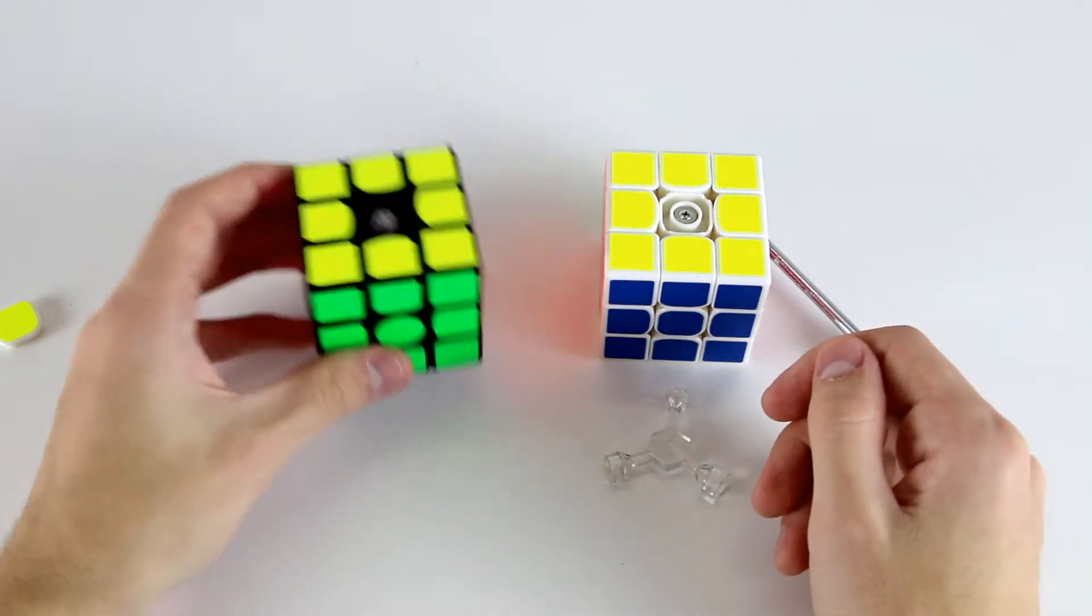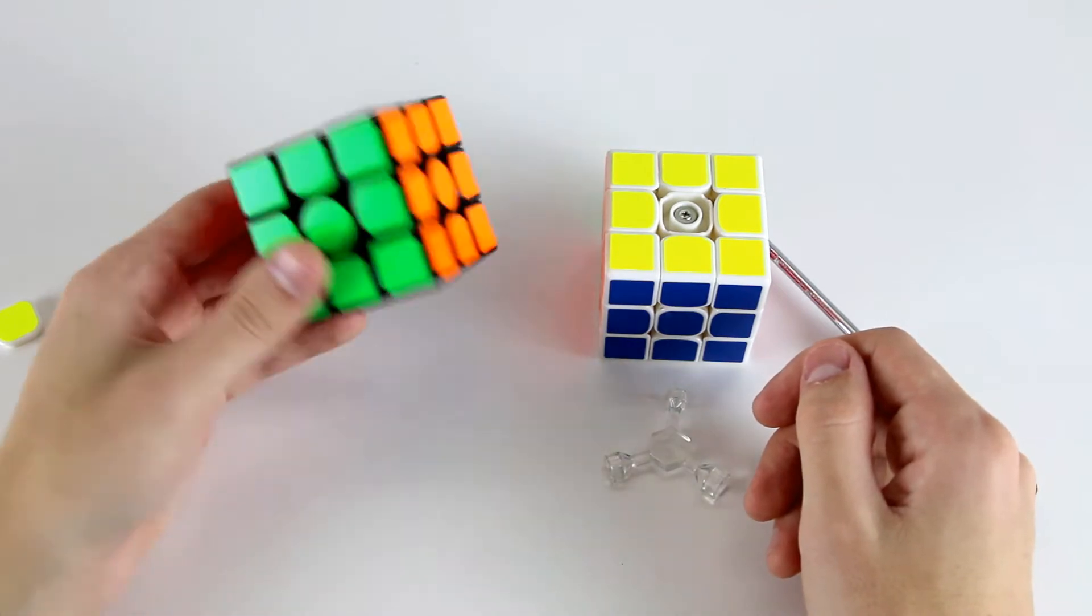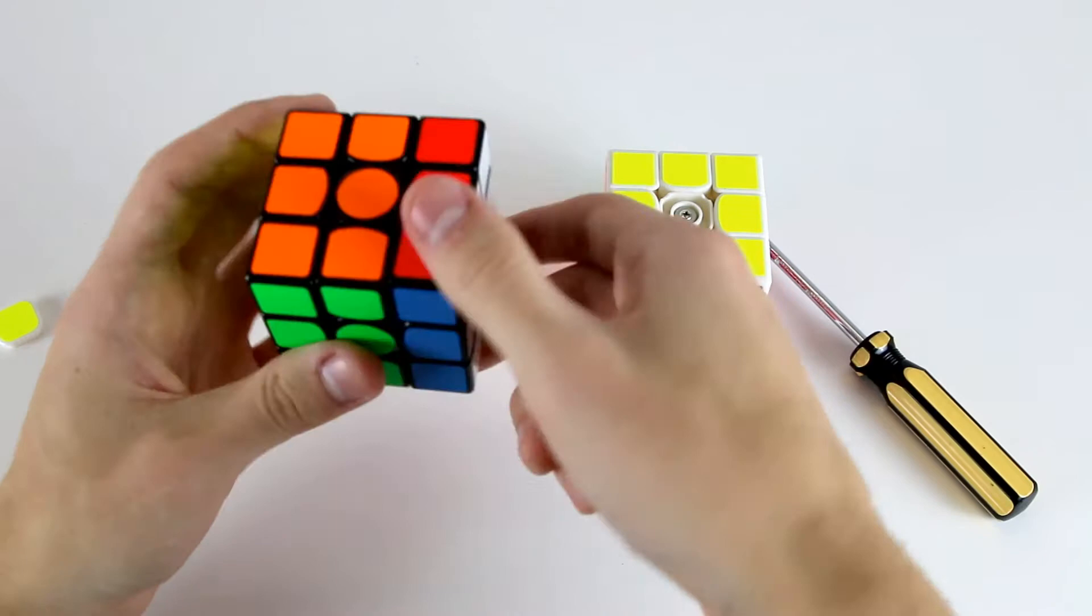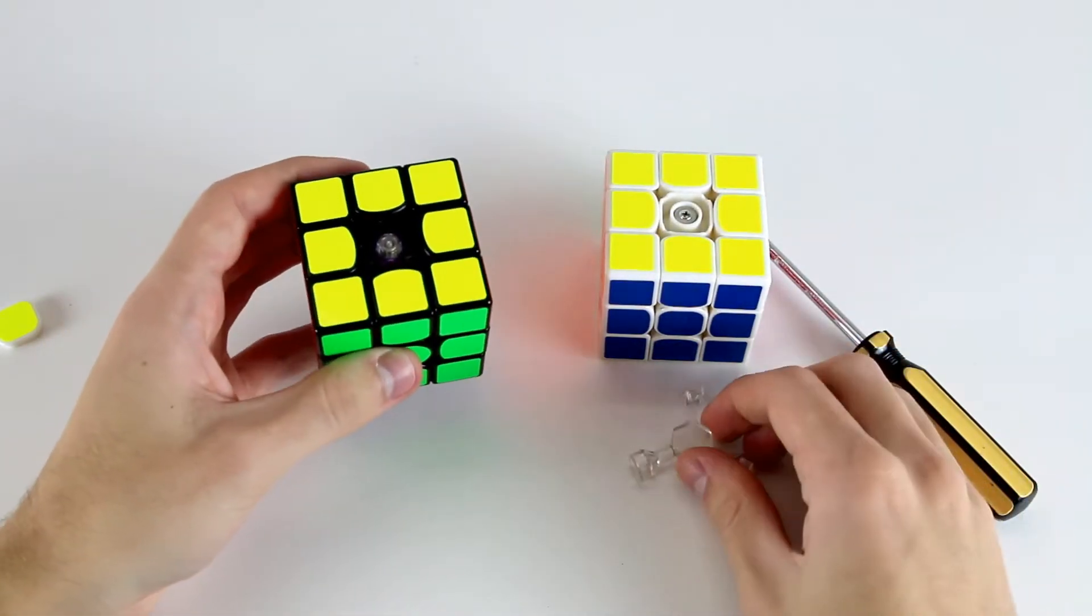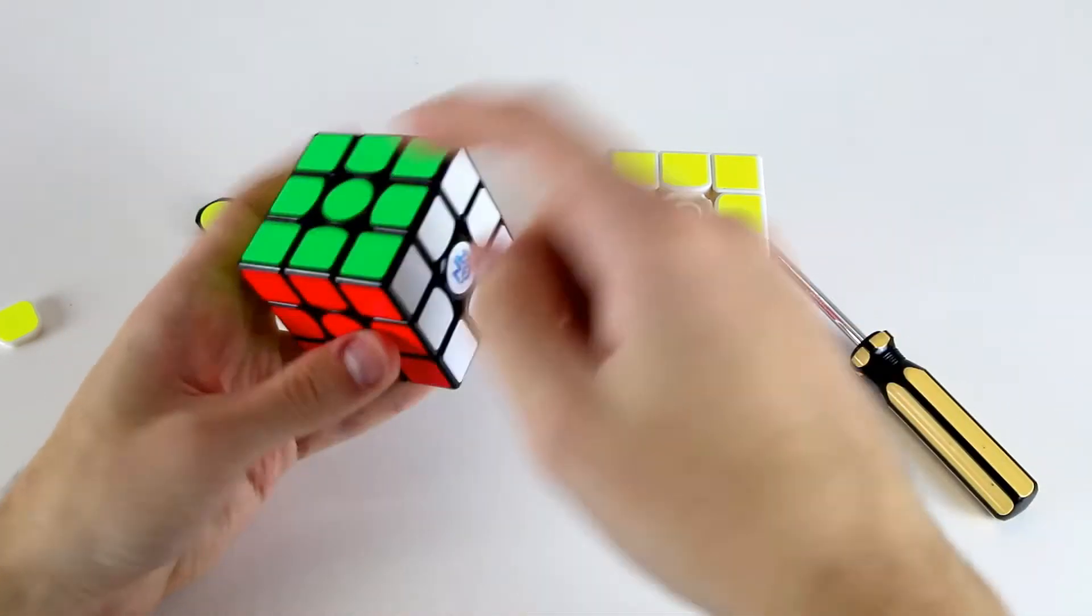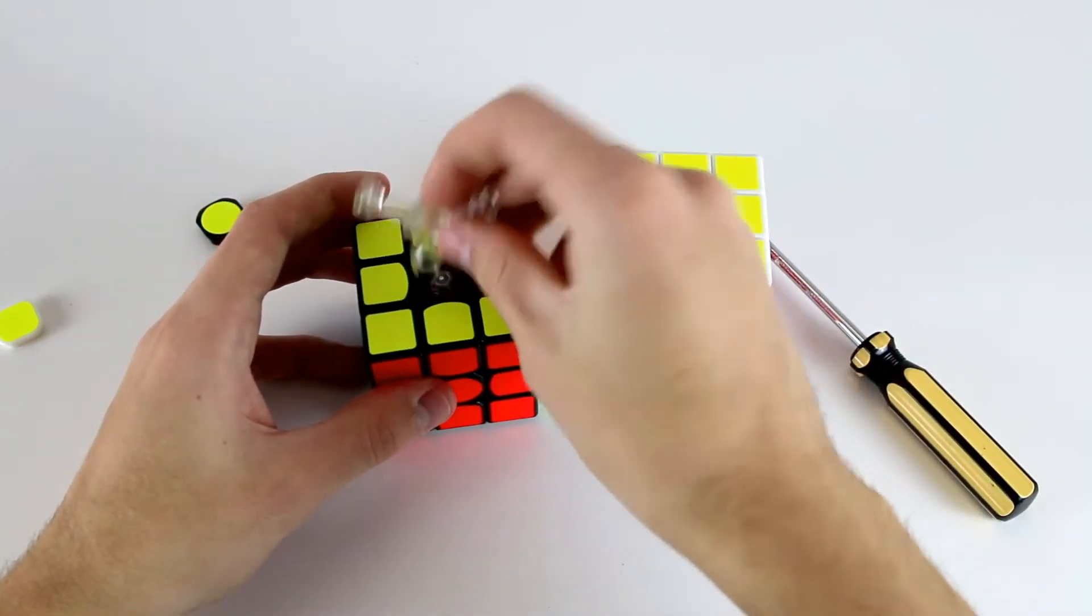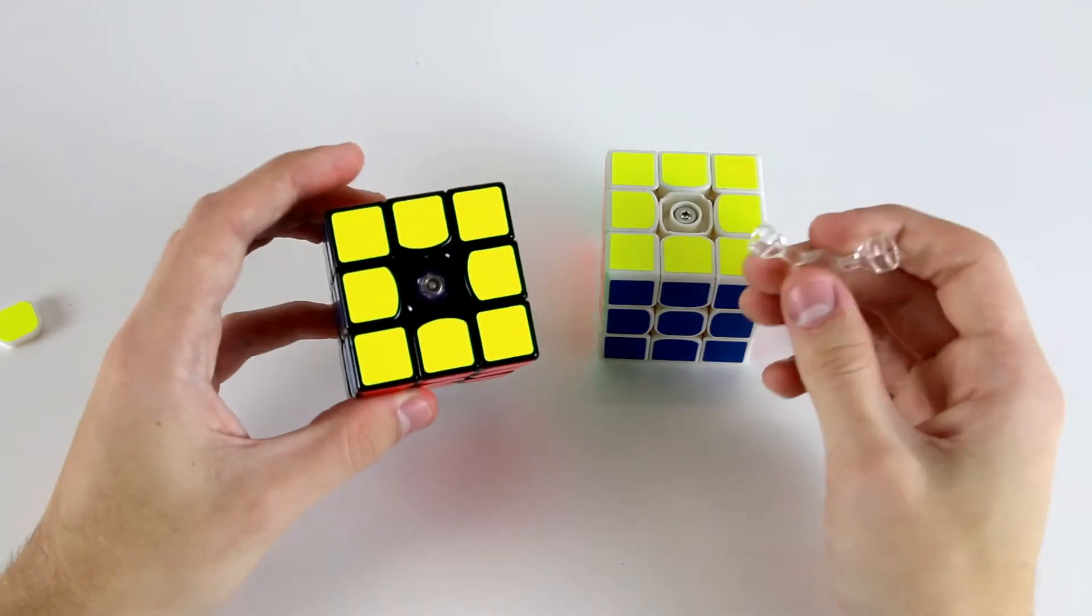When you're adjusting your cube you want to make sure that the tensions are even on all of the sides, so you don't want one side to be significantly slower or faster than another side. So when you change your tensions you want to actually take off all six center caps and do the exact same adjustment to every single side.